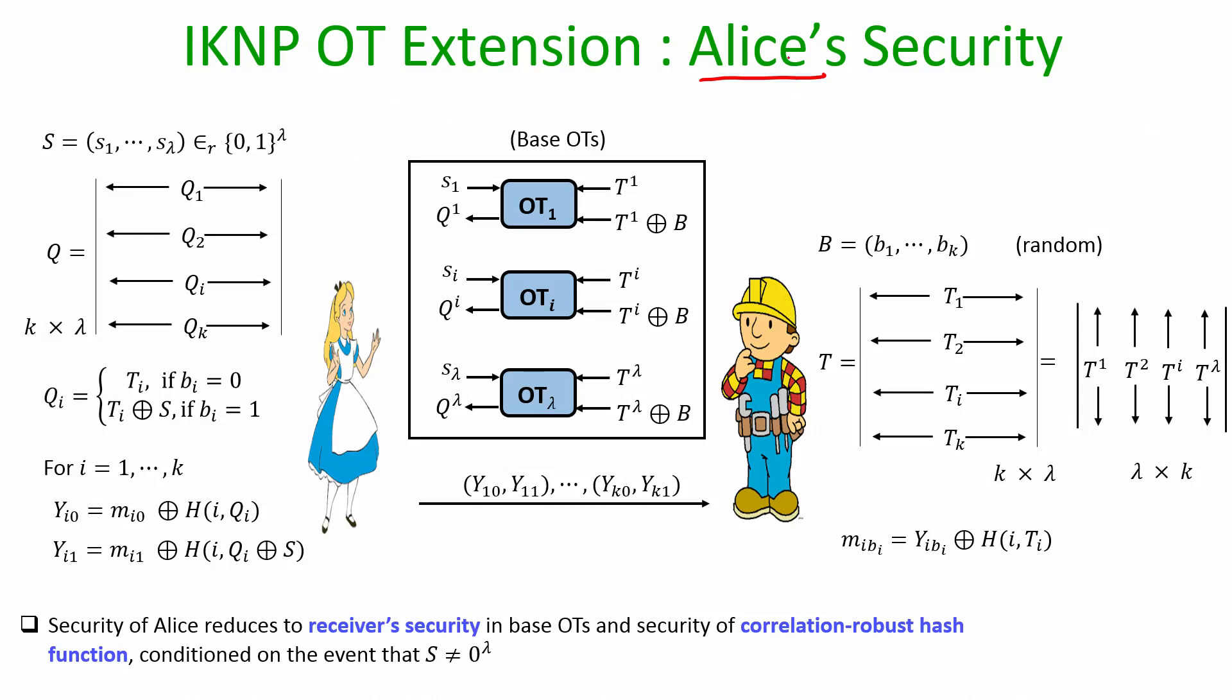Now, what about Alice's security in the whole procedure? We want to argue here that if Bob is corrupt then for the ith pair he learns only the message with index BI. We have to argue that he does not learn anything about the message with index 1 minus BI from the ith pair, and this reduces to the security of receiver in the base OTs because Alice is acting as the receiver in these base OTs and she is participating with the individual entries of the S vector. If somehow Bob learns the full S vector then the problem arises, but if S vector remains hidden then even though for the other message in the ith pair he receives the corresponding ciphertext YI 1 minus BI, he receives this ciphertext fine.